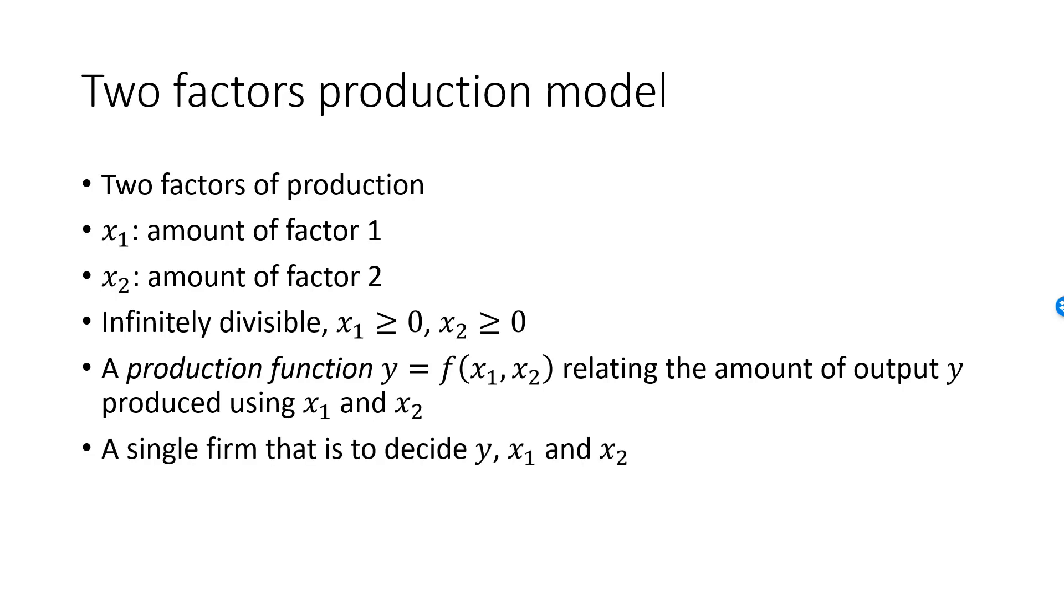We have a single firm that needs to make two decisions. It needs to decide on y, how much to produce of the output good, and it needs to decide on which combination of the production factors x1 and x2 it should use to achieve this level of production. x1 and x2 must be selected such that f of x1 comma x2 is precisely y. No time in this model, so the model is best understood as a decision problem taking place at a single point in time.